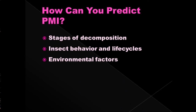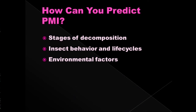There are three common methods used in estimating the post-mortem interval, or PMI for short. We look at stages of decomposition — what happens to the body after death has occurred. We also look at insect behavior and life cycles, which is forensic entomology, the study of insects. And we observe environmental factors that might have contributed to the state of the body, such as weather or other environmental changes.